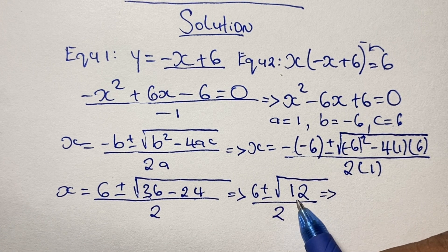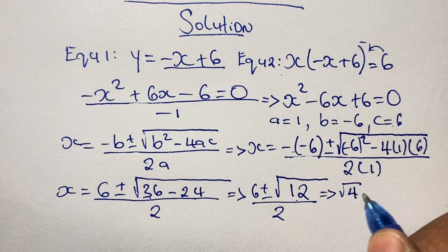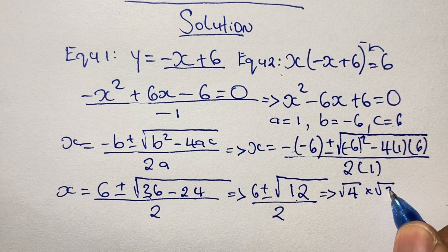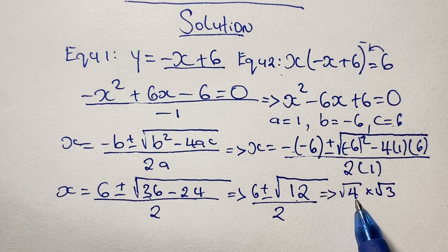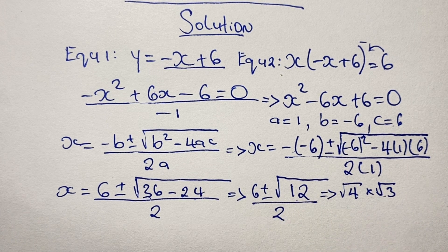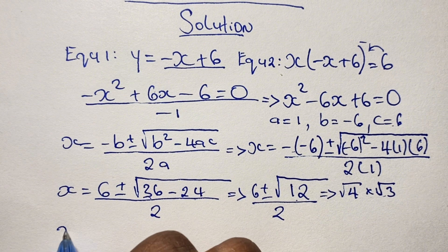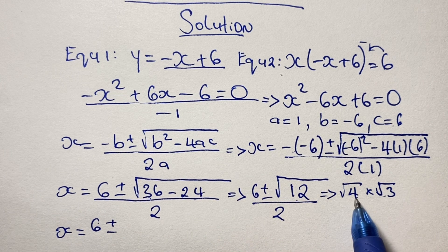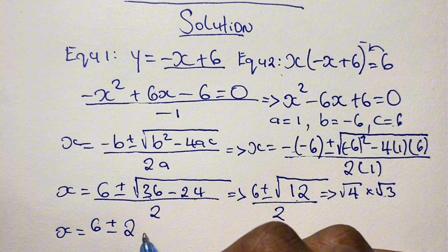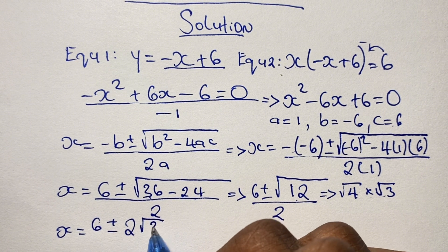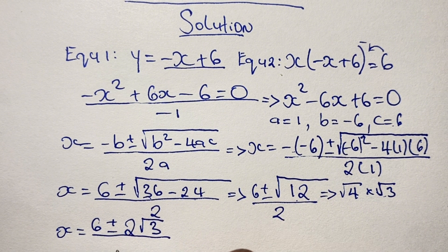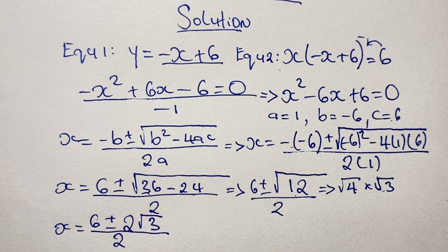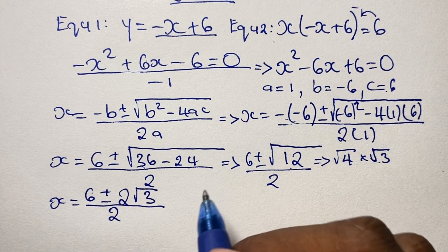We can simplify the square root of 12 by listing its factors: the square root of 4 times the square root of 3. We use these two factors to simplify our solution for x. Since the square root of 4 is 2, and the square root of 3 is irrational and stays as the square root of 3, we have 6 plus or minus 2 times the square root of 3, all over 2.